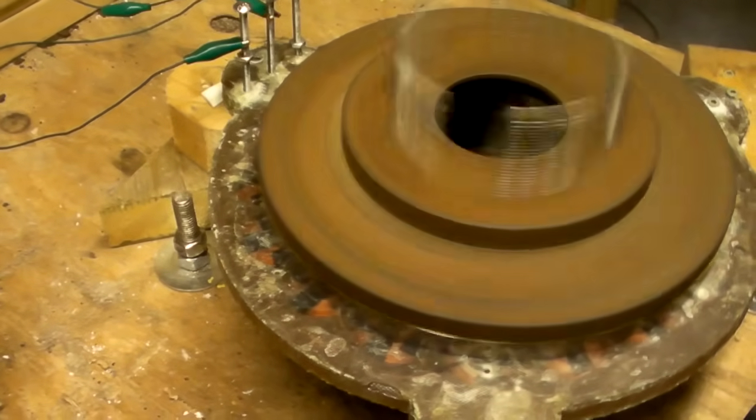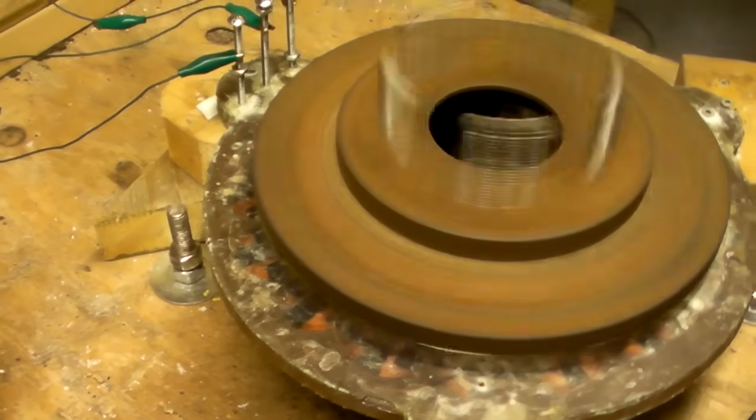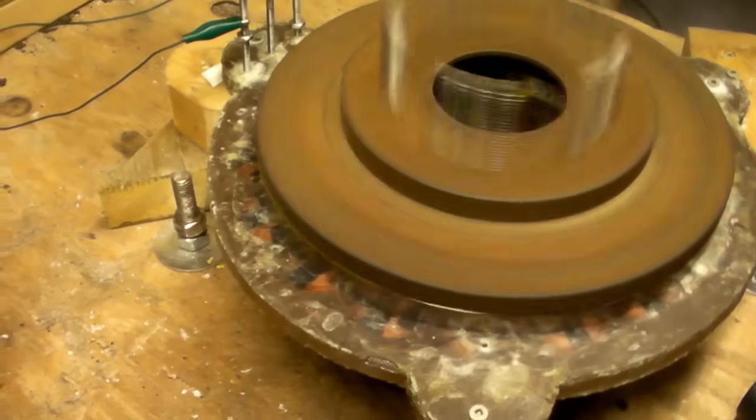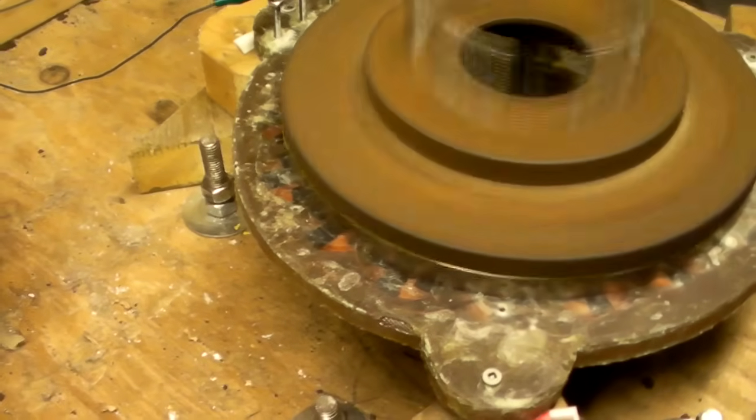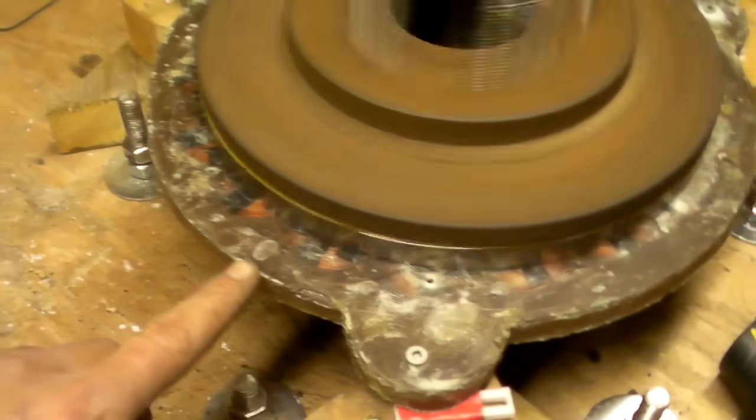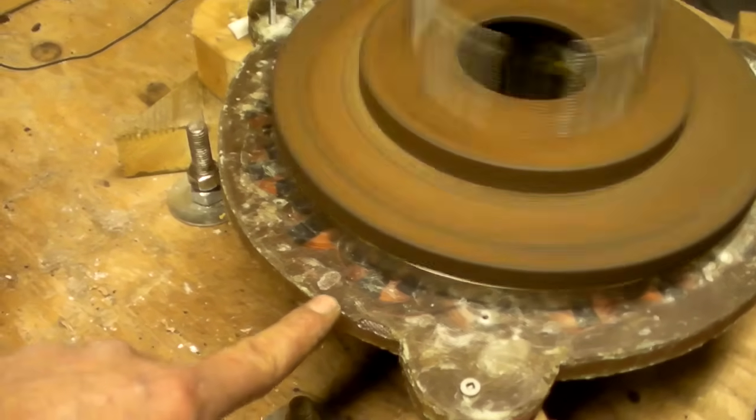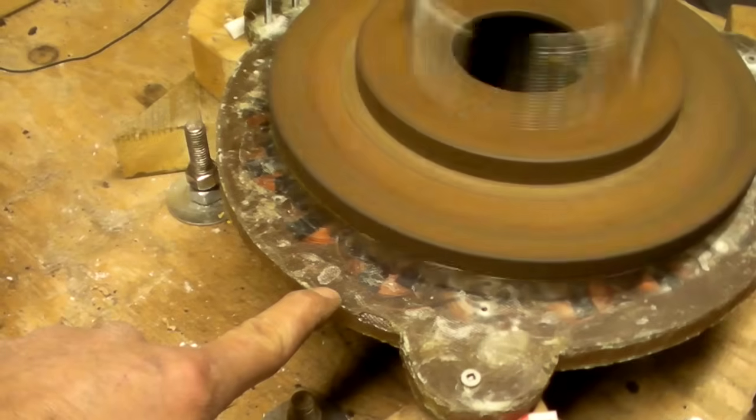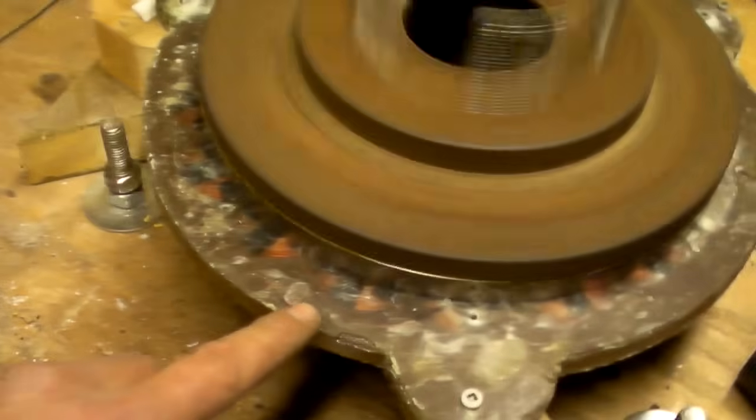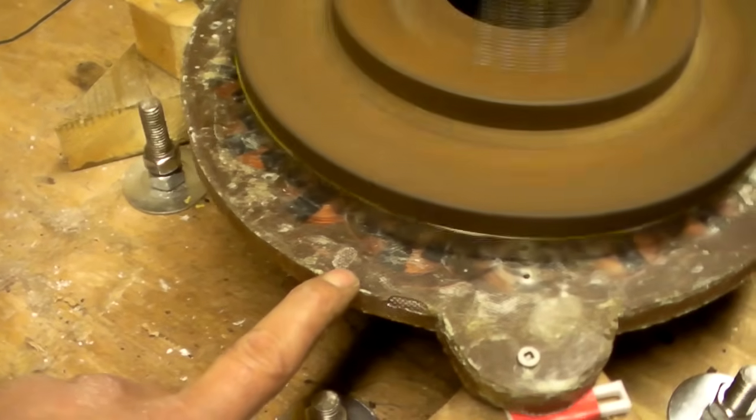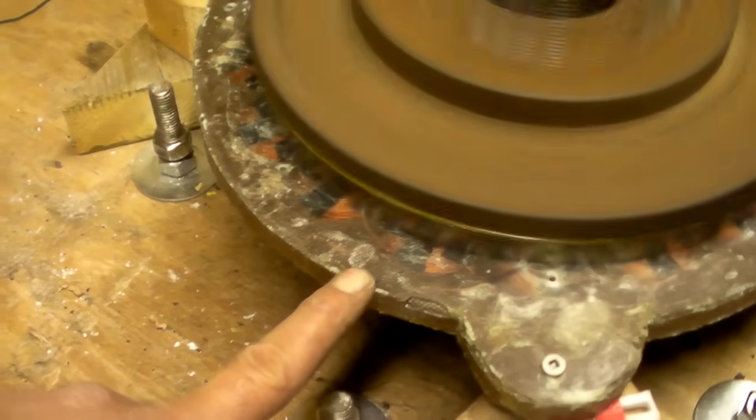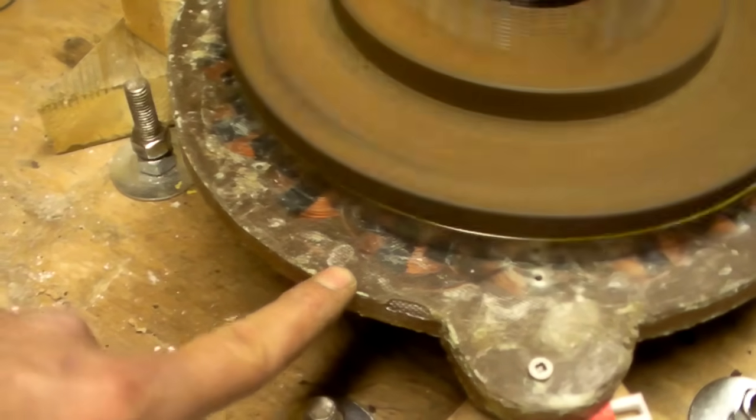Okay, here's the PMA Permanent Magnet Alternator No. 2, which has this stator. In this stator it has 18 coils and each coil has 125 turns, it's 18 gauge wire.